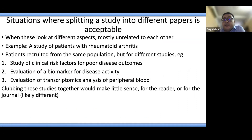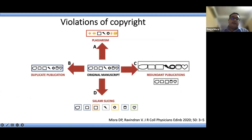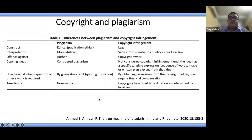Splitting a study into different parts is acceptable when the parts look at different aspects, mostly unrelated to each other. For example, a cohort of rheumatoid arthritis patients could be used to study clinical risk factors for poor disease outcomes, to evaluate a biomarker for disease activity, and to evaluate gene expression signature in peripheral blood. It doesn't make sense to put all these studies together — it is very right to publish them each as different studies.